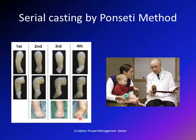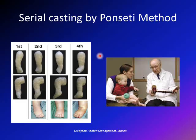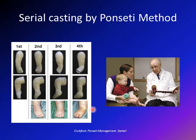About 70% of these children may need a small procedure to cut the Achilles tendon — an Achilles tenotomy — to correct the equinus and bring the foot and ankle upward. This can be done in the clinic or in the OR depending on surgeon and family preference. The last cast then corrects the equinus after tenotomy.